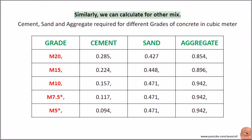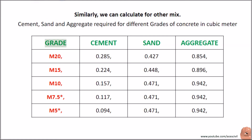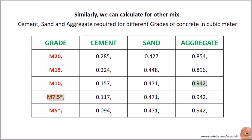Similarly, we can calculate for other mix grades. Cement, sand, and aggregate required for different grades of concrete in cubic meters: M20 — cement 0.285, sand 0.427, aggregate 0.854; M15 — cement 0.224, sand 0.448, aggregate 0.896; M10 — cement 0.157, sand 0.471, aggregate 0.942; M7.5 — cement 0.117, sand 0.471, aggregate 0.942.